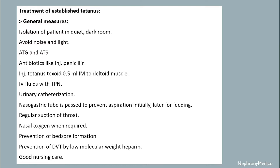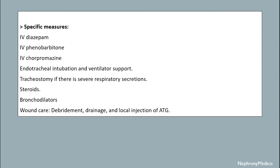Treatment of established tetanus — general measures include: isolation of the patient in a quiet and dark room, avoiding noise and light; ATG and ATS; antibiotics like injection penicillin; injection tetanus toxoid 0.5 mL intramuscular to the deltoid muscle; IV fluids with total parenteral nutrition; urinary catheterization; nasogastric tube to prevent aspiration and later for feeding; regular suction of throat; nasal oxygen when required; prevention of bedsore formation; prevention of DVT by low molecular weight heparin; and good nursing care.